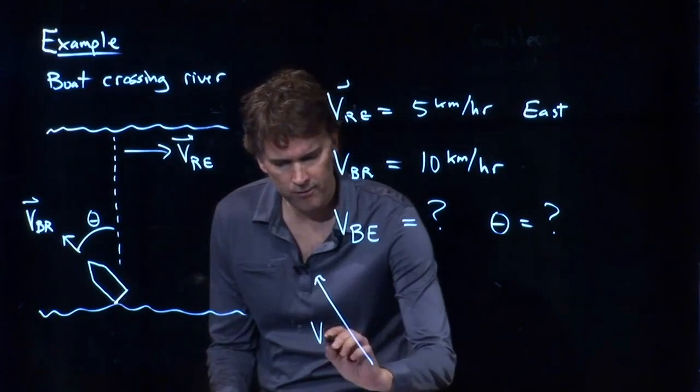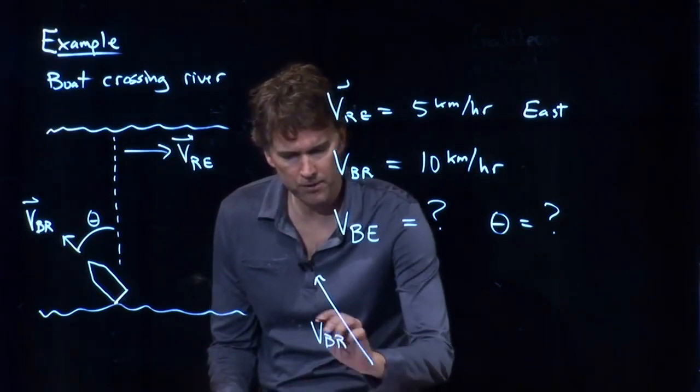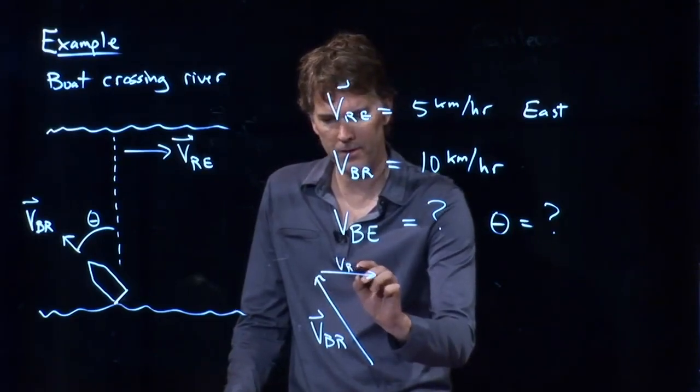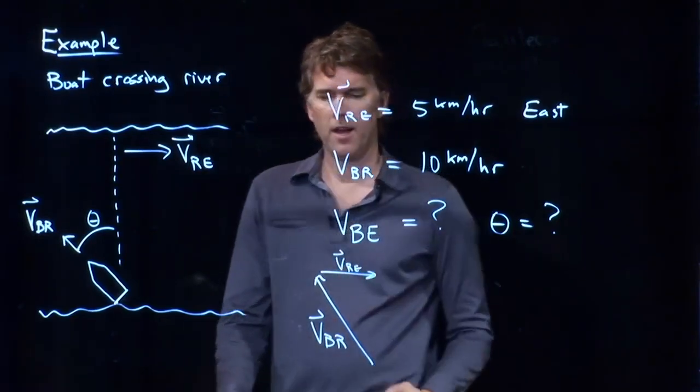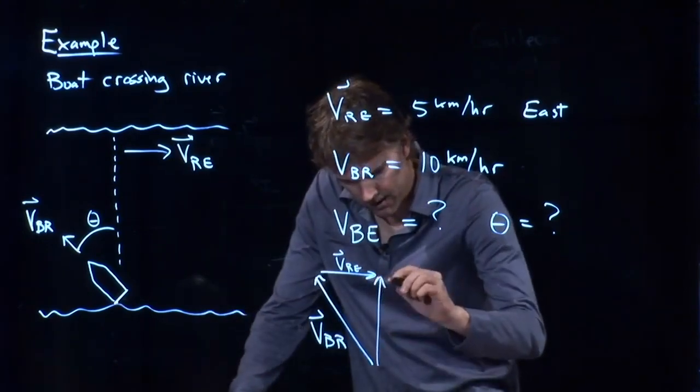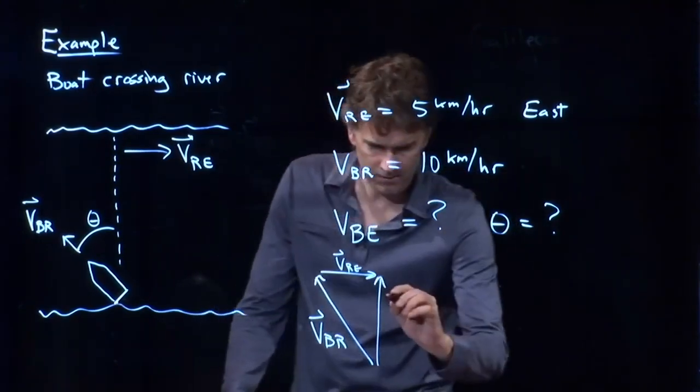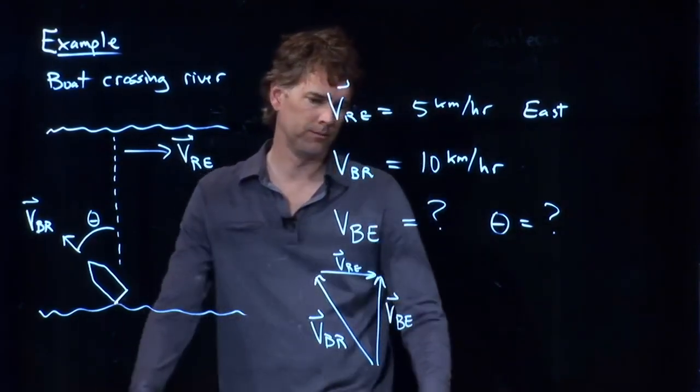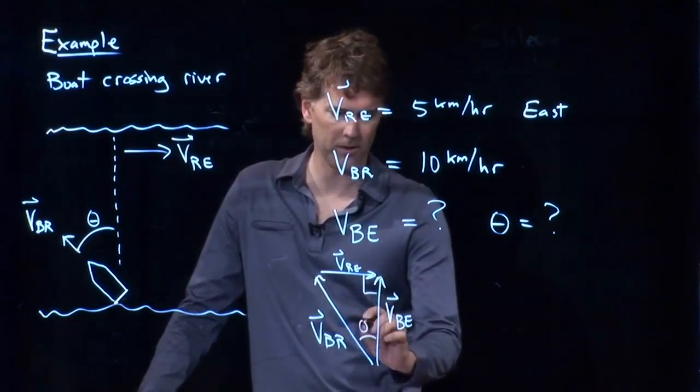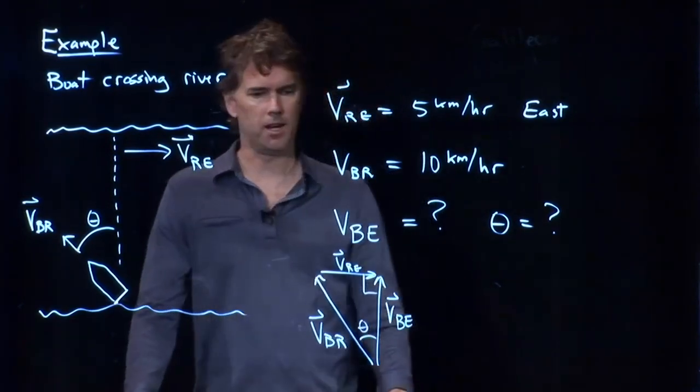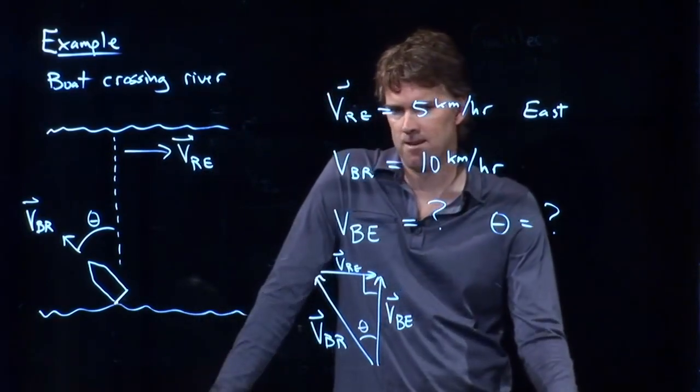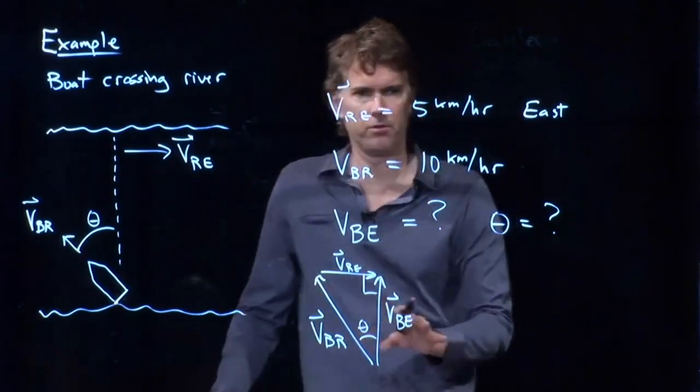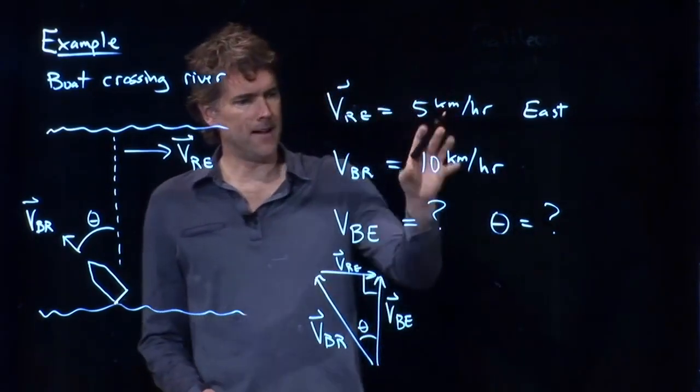This is the vector of the boat relative to the river. This is the river relative to the Earth. And if I add those two up, it looks like I will get the velocity of the boat relative to the Earth. This is the right angle. This is our angle theta. And I think that's just about all the information we need. And now look. We've drawn a triangle. We know that Pythagoras holds for this right triangle. We've got a 5. We've got a 10.